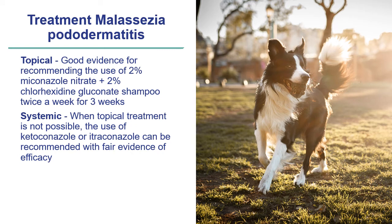When treating Malassezia pododermatitis, as with bacterial pyoderma, topical therapy is the first line. There is good evidence for recommending 2% miconazole nitrate and 2% chlorhexidine gluconate shampoo twice weekly for three weeks, after which the case should be reviewed and treatment continued, changed in frequency, or discontinued based on clinical evolution. When topical therapy is not possible, ketoconazole or itraconazole can be recommended with fair evidence of efficacy, though potential side effects including hepatotoxicity should be discussed with clients.